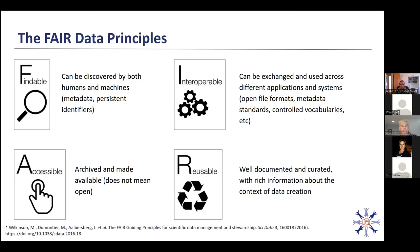Briefly, what is FAIR? Findable means that data can be discovered by both humans and machines — for example, by using metadata and by referencing data with unique persistent identifiers such as DOIs. Accessible means the data is archived in long-term storage and available using standard technical procedures — that doesn't mean the data has to be open, but it at least has to have information on how people can retrieve it. Interoperable means the data can be exchanged and used across different applications and systems, for example by using open file formats and appropriate metadata.